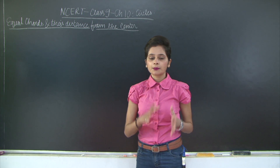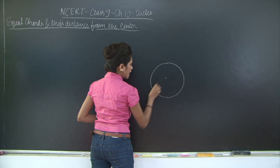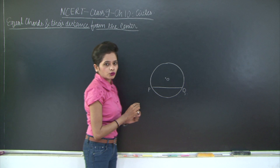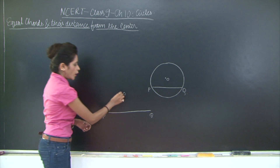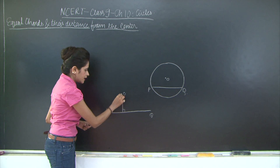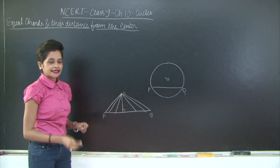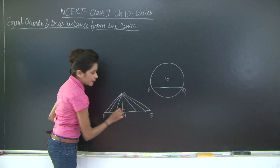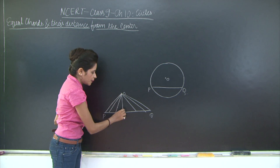But let us first understand what is the distance between the center and the chord. I'll draw a circle with center O and mark PQ as the chord. I need to find the distance between O and PQ. From O, I can draw several lines onto PQ — one would be the perpendicular line, and there would be other lines as well. The distance between O and the line PQ is the perpendicular length OM, not any of the other lines.